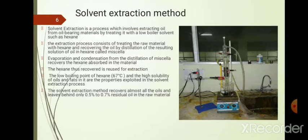The solvent extraction method leaves only 0.5 to 0.7% residual oil in the raw material, meaning we can extract almost 99% of the oil from the seed, whereas the expeller press method leaves much more oil in the residue.